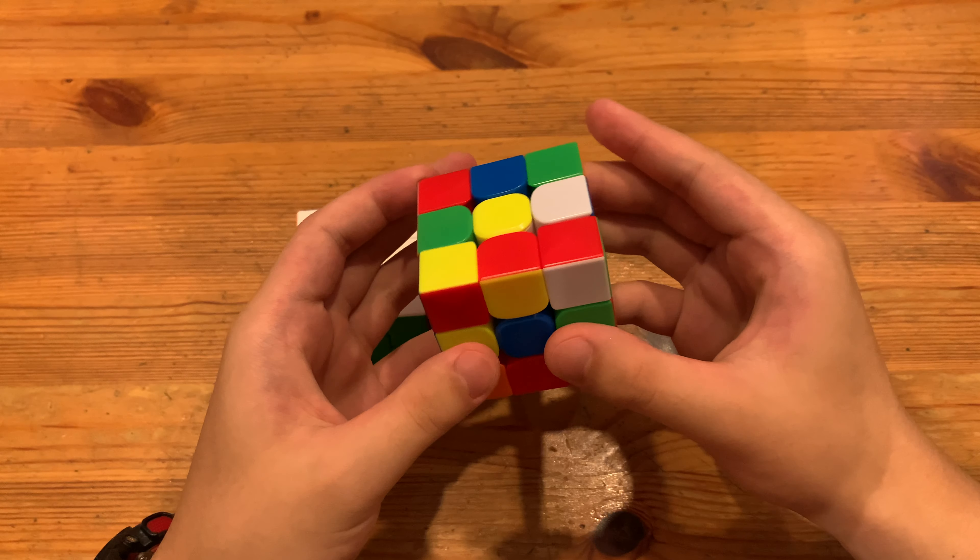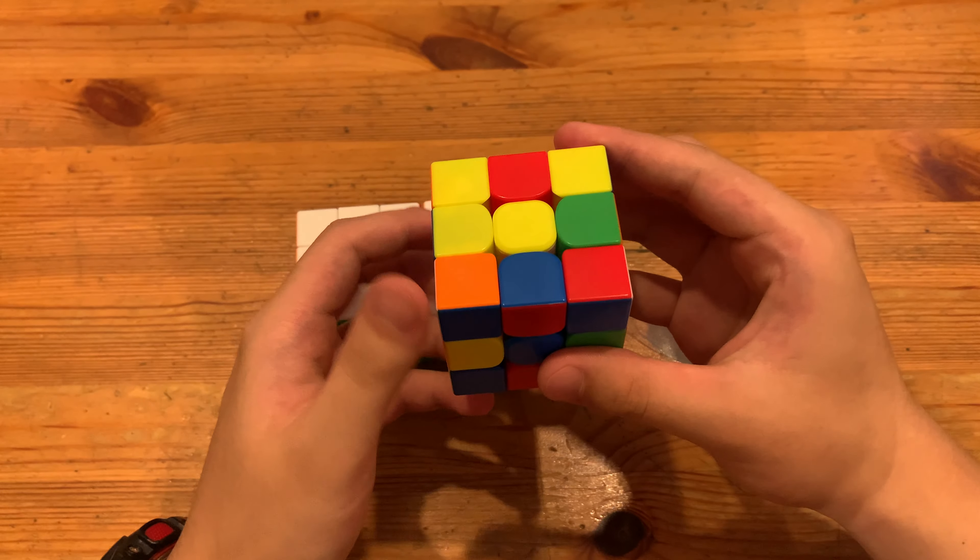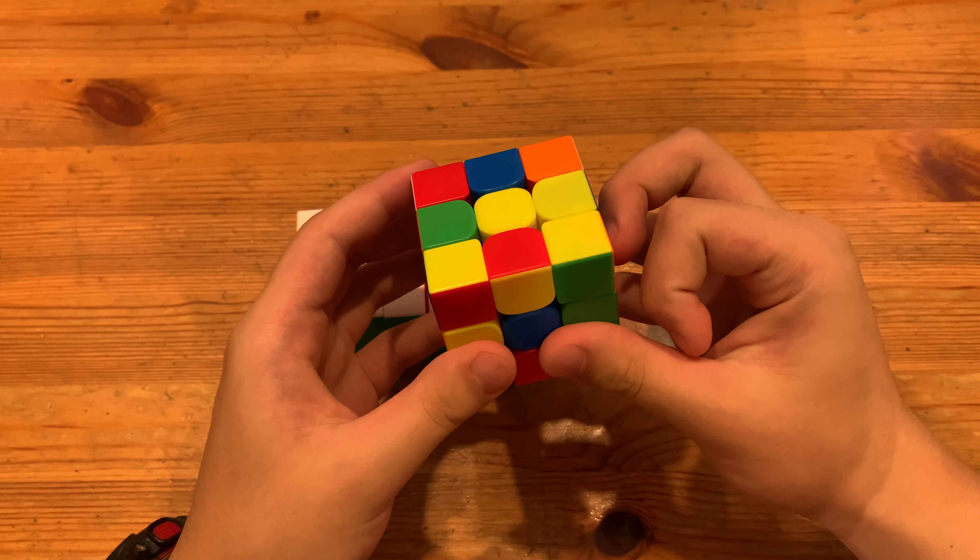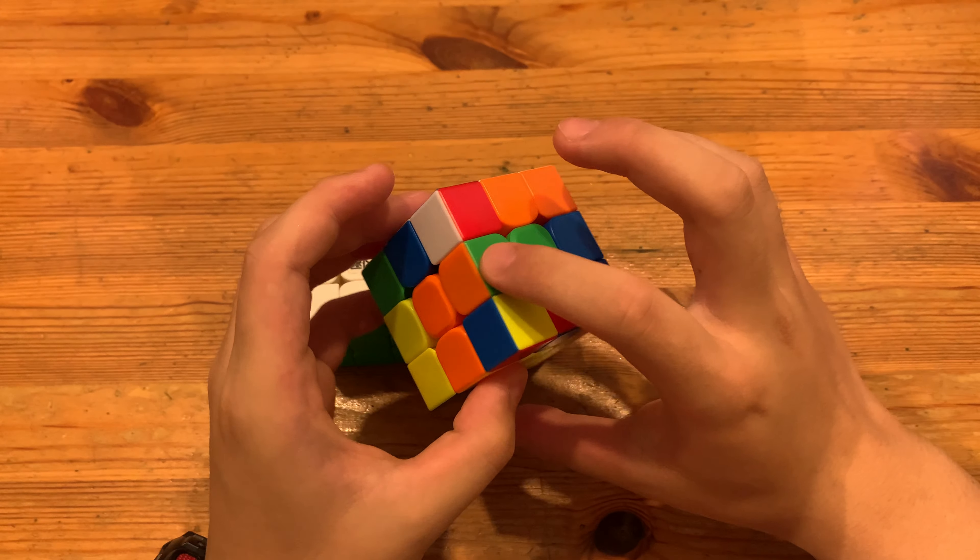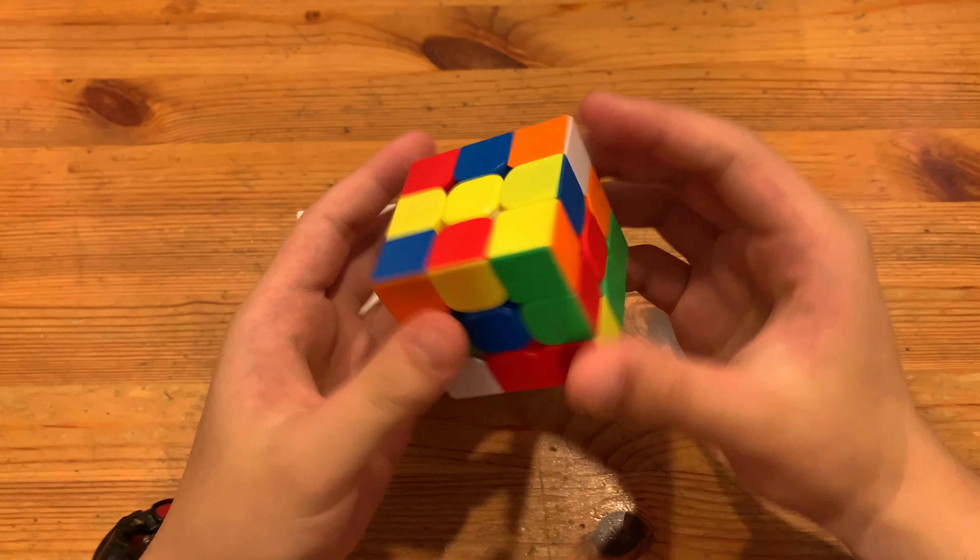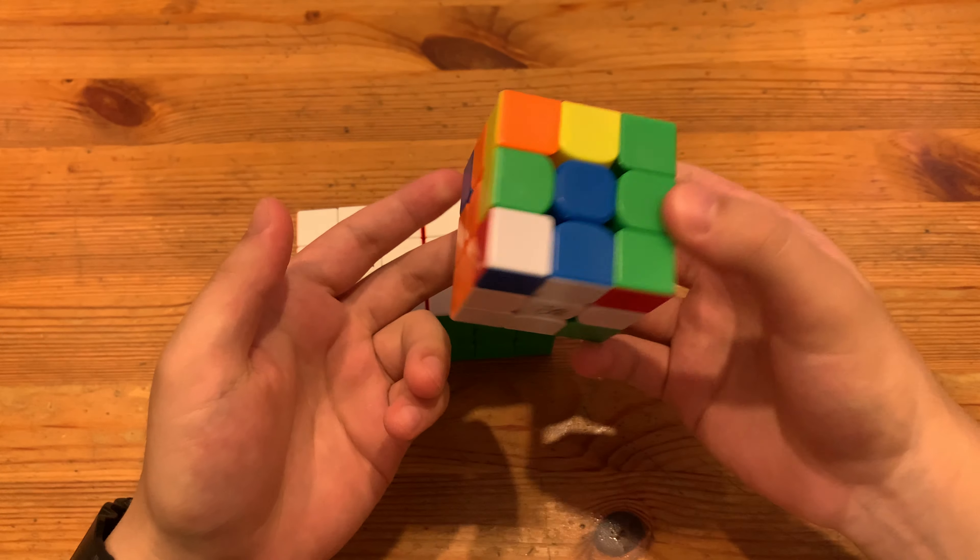And then I'll do a U2 to move this into position. And then L prime U2 to L prime to insert this cross edge, this cross edge with this F2L edge. And then here, I'll just do a D move like that.